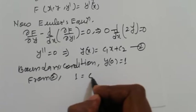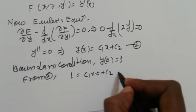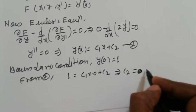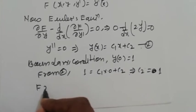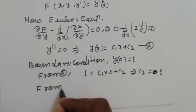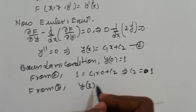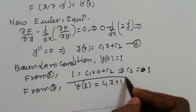So apply from 2, we get y(0) = 1 equal to C₁ × 0 + C₂, so C₂ = 1. Putting the value of C₂, so from 2 we get y(x) = C₁x + 1.